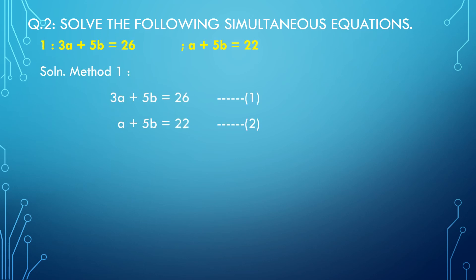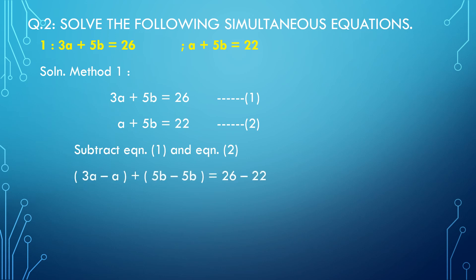3A plus 5B equal to 26 is equation number 1. A plus 5B equal to 22 is equation number 2. Now subtract equation 2 from equation 1. It becomes 3A minus A plus 5B minus 5B equal to 26 minus 22. 3A minus A is 2A; 5B minus 5B gets cancelled; 26 minus 22 equals 4. So 2A equals 4, therefore A equals 2.